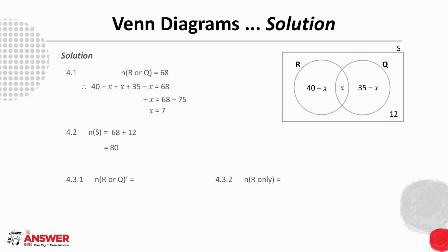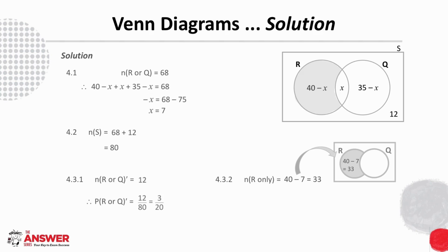Looking at the probabilities in 4.3: the probability of an item chosen at random not being in R or Q — there are 12 elements outside R or Q, so the probability is 12 over 80 which simplifies to 3 over 20. The probability of an item chosen at random being in R but not Q requires calculating elements in R but not Q: 40 minus 7 gives 33, so the probability of R only is 33 over 80.